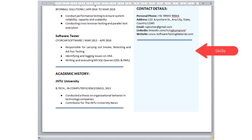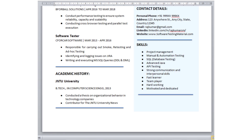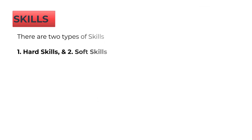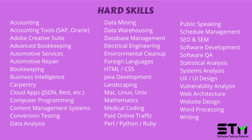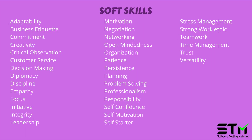The next section is skills. In this section, we can add hard skills and soft skills. Hard skills are the technical skills which are specific to the job and industry. Soft skills are the abilities which are social skills or people skills.